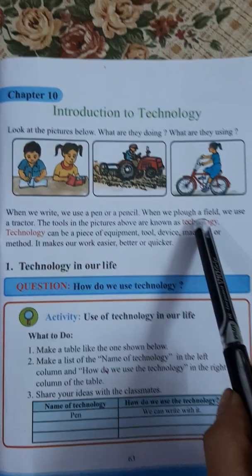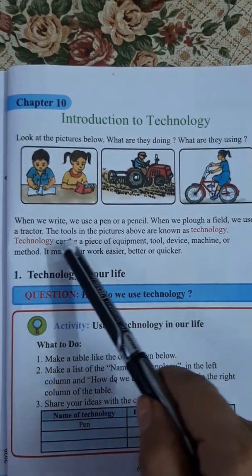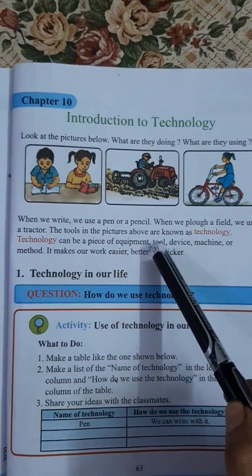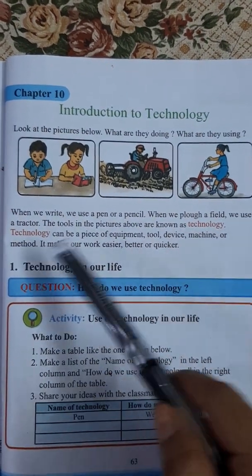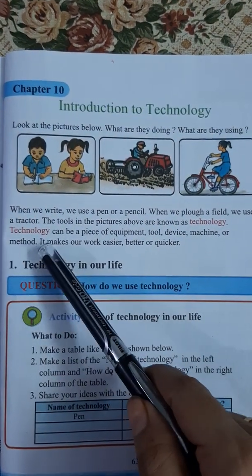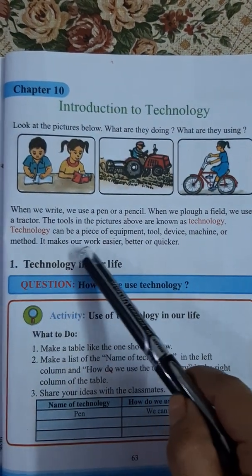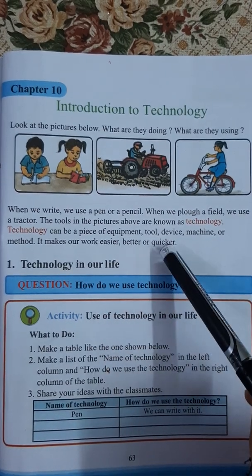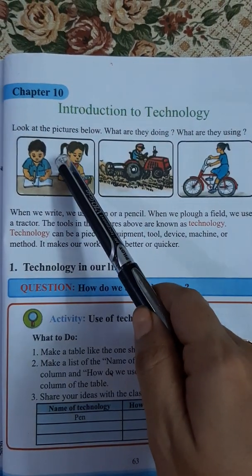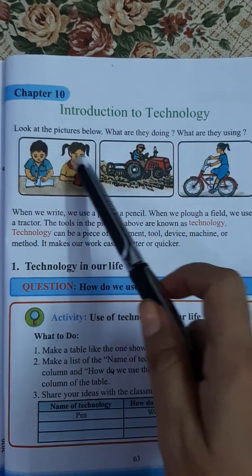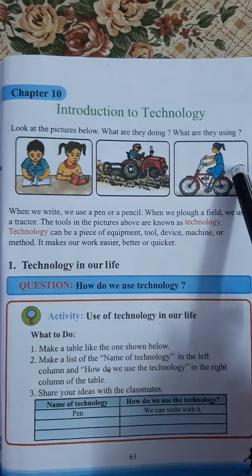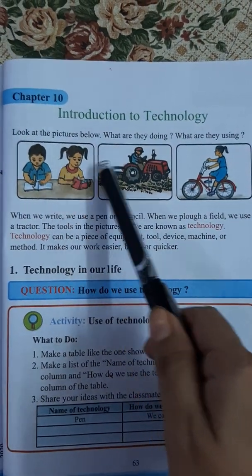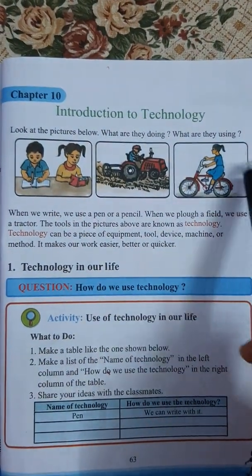So what is technology? Technology can be a piece of equipment, tool, device, machine or method. It makes work easier, better or quicker. You can see three pictures here — this is technology.